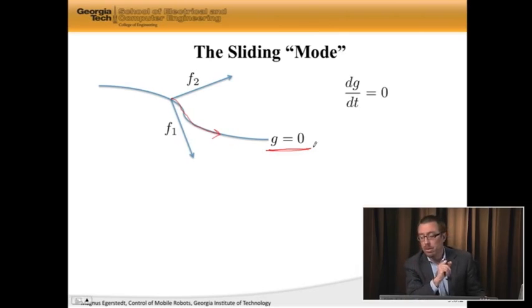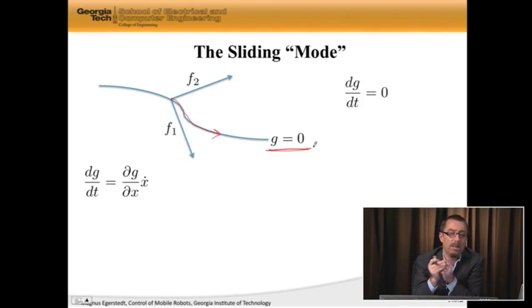So one thing we need to do is say that dg dt is equal to 0. Well, let's see where that takes us. dg dt is equal to dg dx times x dot.